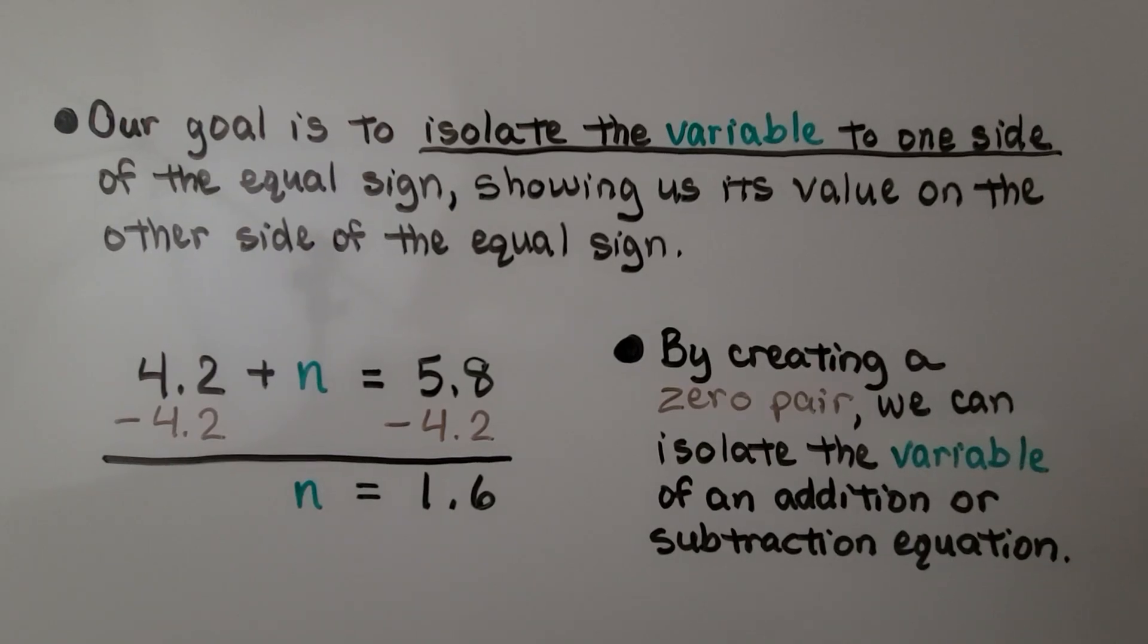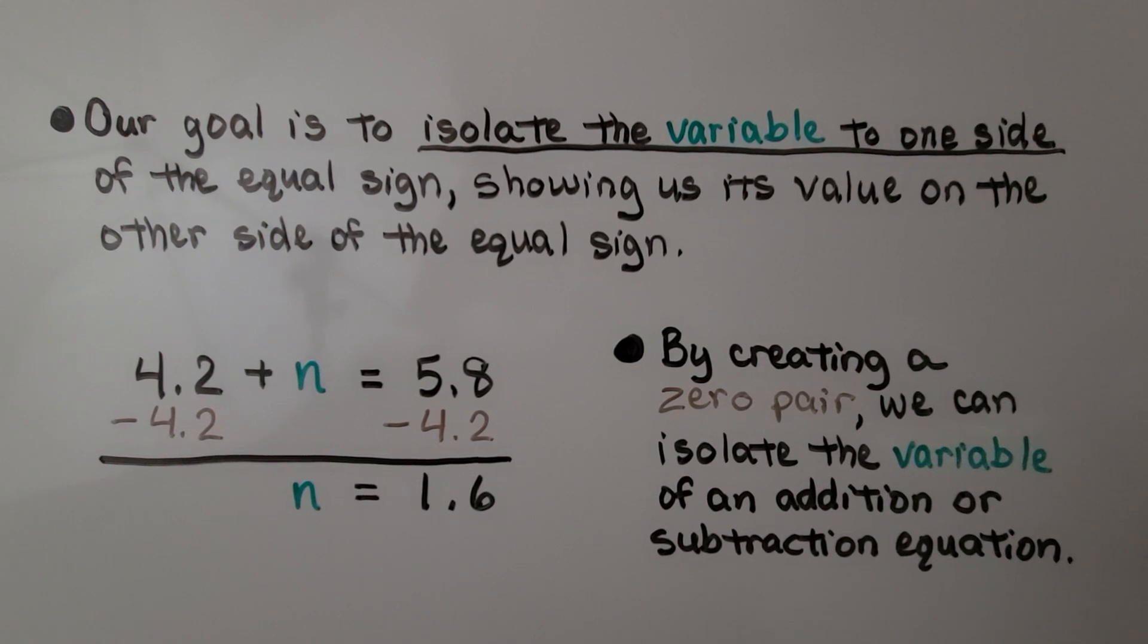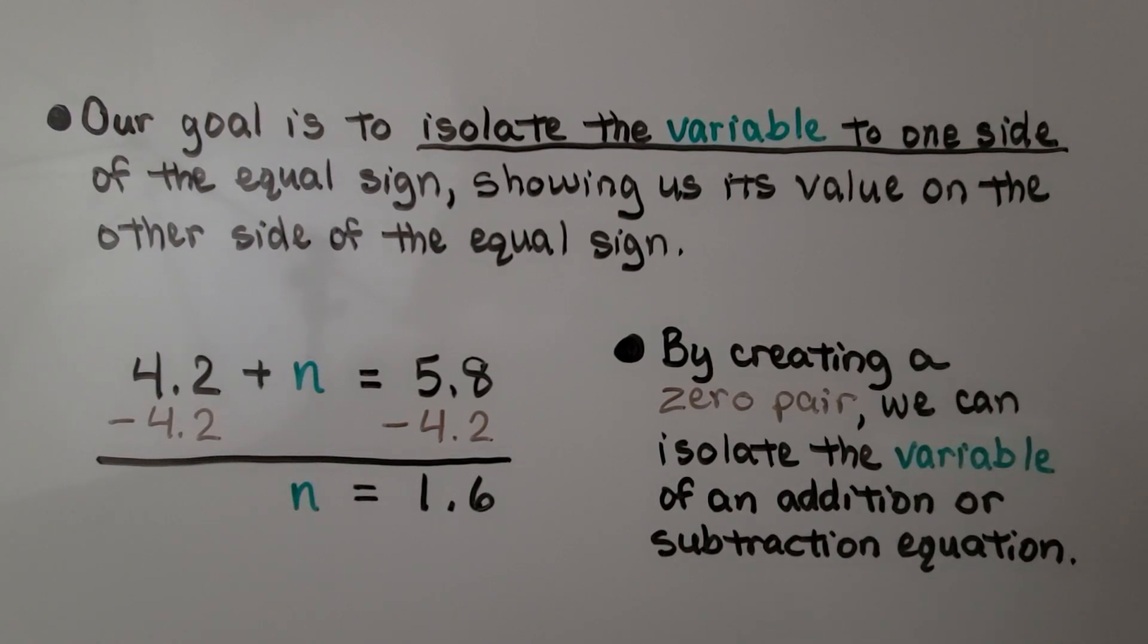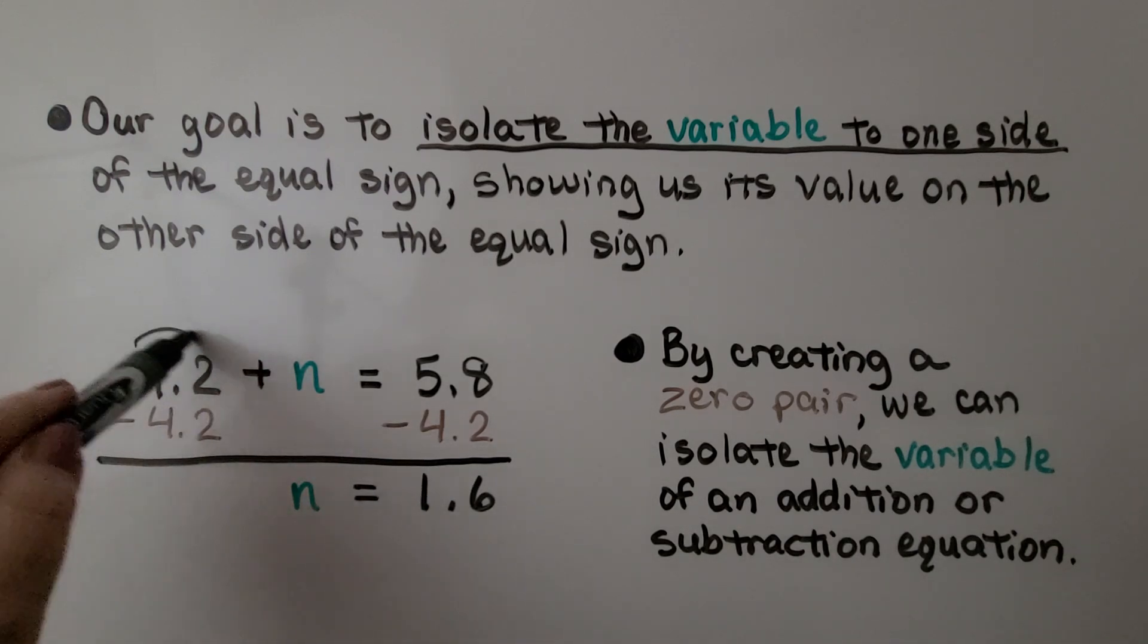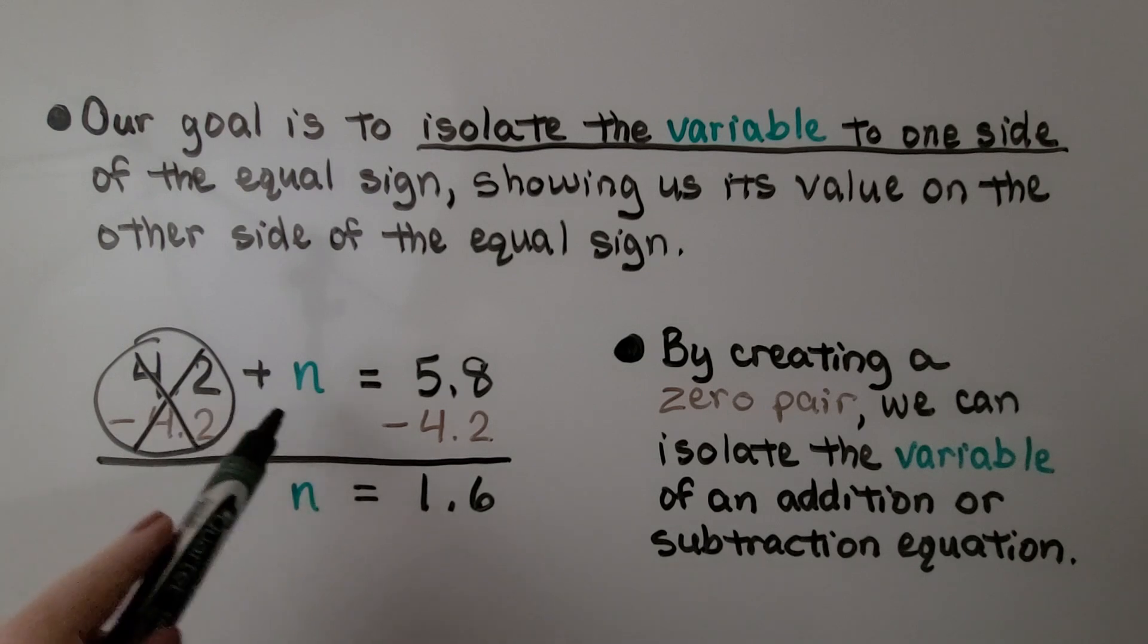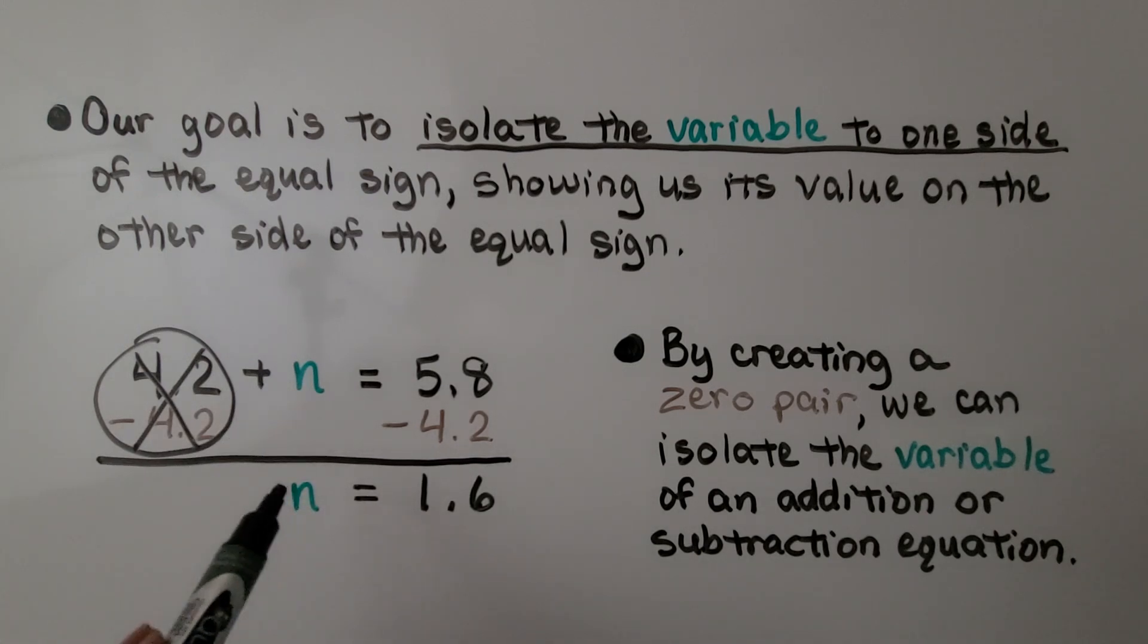Our goal is to isolate the variable to one side of the equal sign, showing us its value on the other side of the equal sign. By subtracting 4 and 2 tenths from both sides, we can eliminate this one, create a zero pair, and now the n is isolated. It's all by itself on one side of the equal sign.